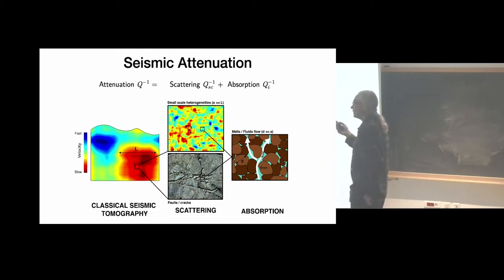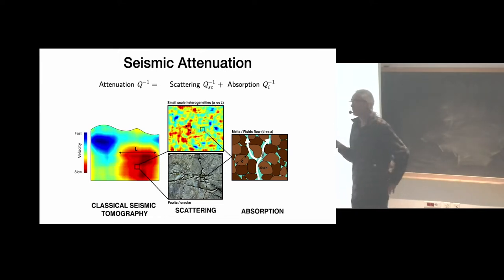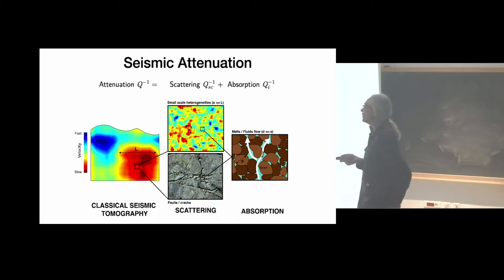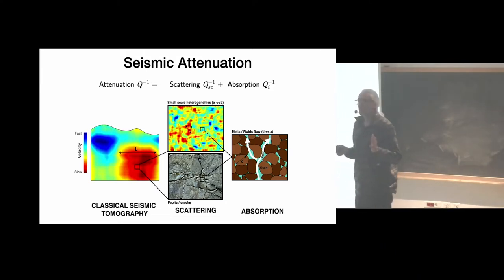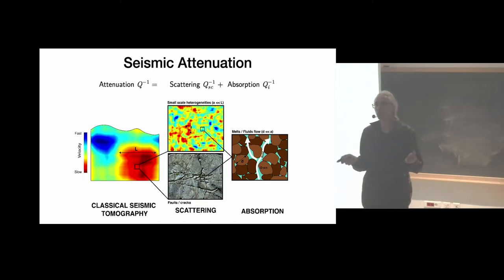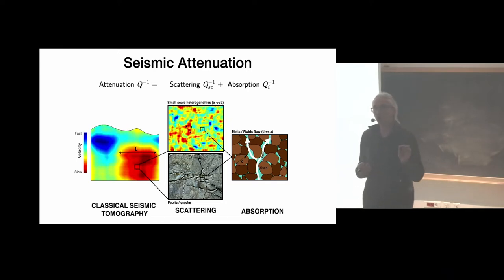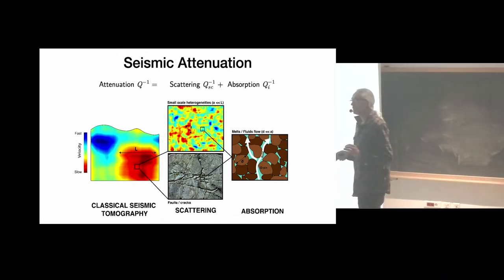When the lunar samples were brought back to Earth, people did the first measurements of attenuation. Kanamori published that the Q of the Moon was 100, but the true value is thousands — an error by a factor of ten. People realized it didn't match the super long duration of the coda. Tittman understood the totally wrong measurement was just due to moisture present in the air of the laboratory.